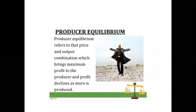Firstly, we need to understand what producer equilibrium actually is. Producer equilibrium refers to that price and output combination which brings maximum profit to the producer, and profit declines as more is produced. This combination is achieved by employing two factors — labor and capital — in such a manner that the maximum output or maximum profit can be attained.